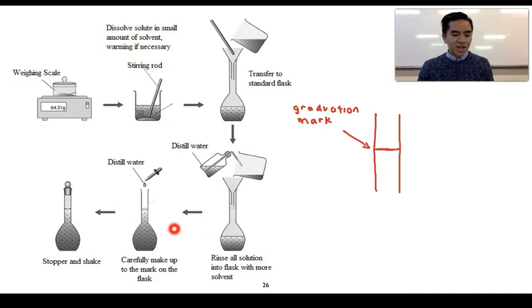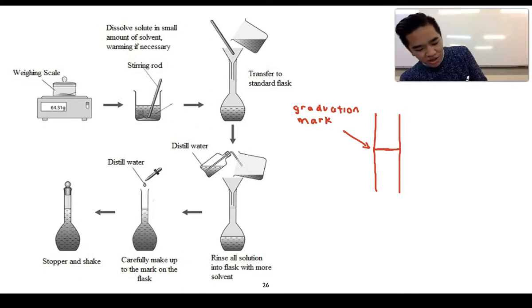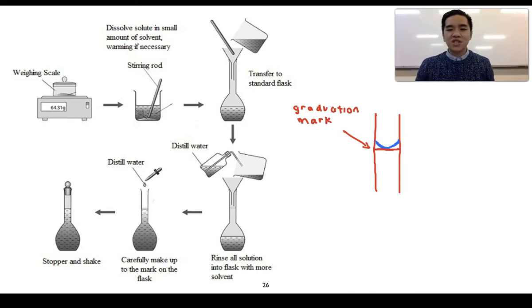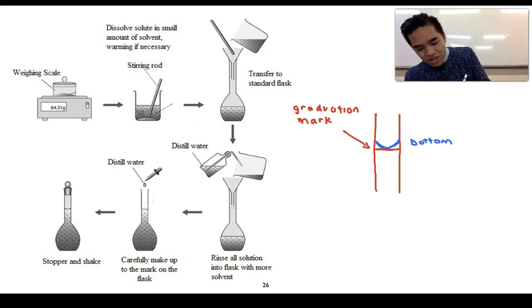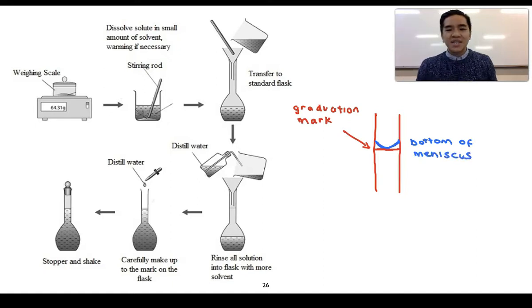From that point on, we then add our water. Usually we add it to about three quarters of the way full and then we use a teat pipette to add the final drops in. What we want to do is ensure that that liquid sits on that calibration mark. We know that liquids form this curvature which is what we call a meniscus.